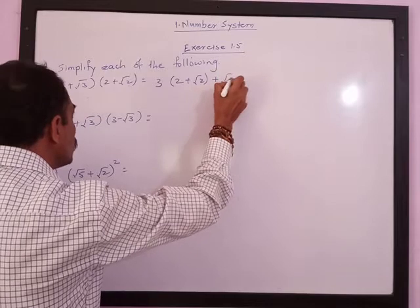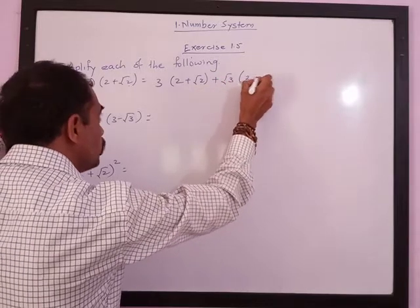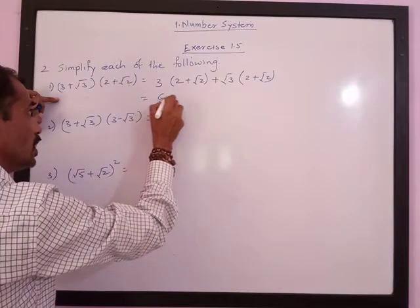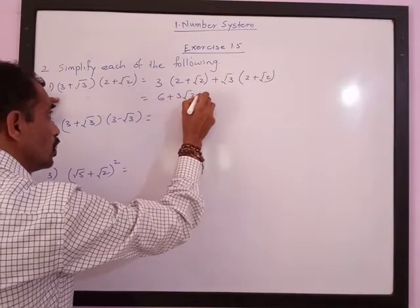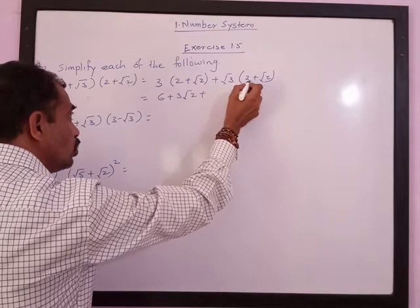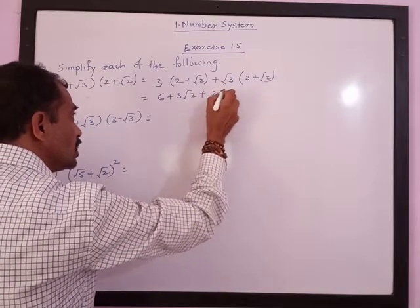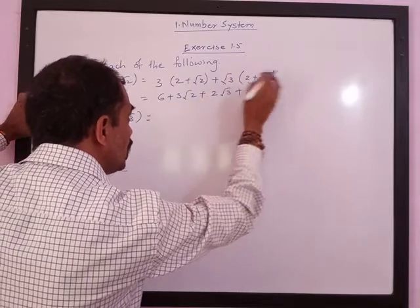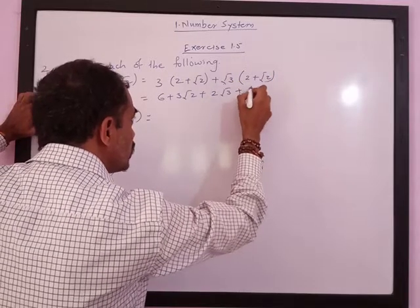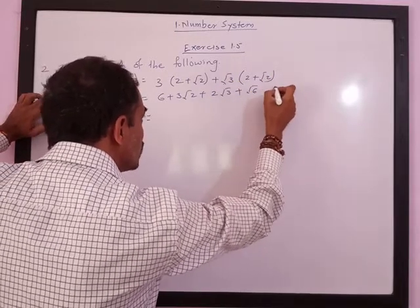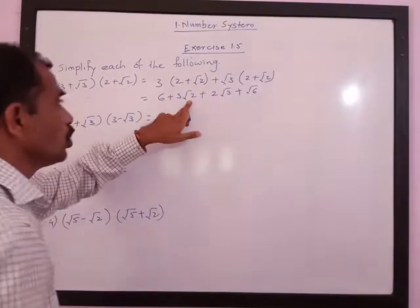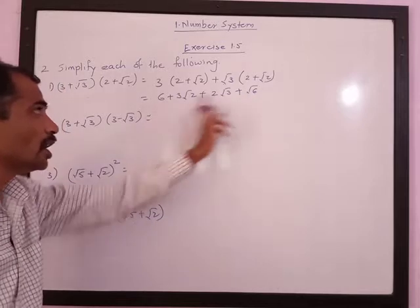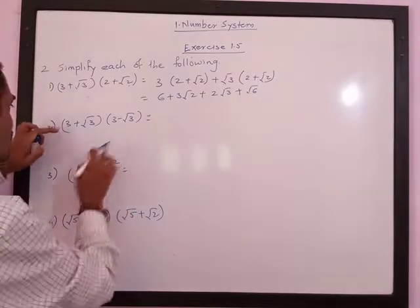Plus root 3 multiplied by (2 plus root 2). This equals 6 plus 3 root 2, plus 2 root 3, plus root 3 into root 2 which is root 6. The rational term is written first and the irrational term is written after. The irrational numbers root 2, root 3, and root 6 are all different, so they cannot be added.